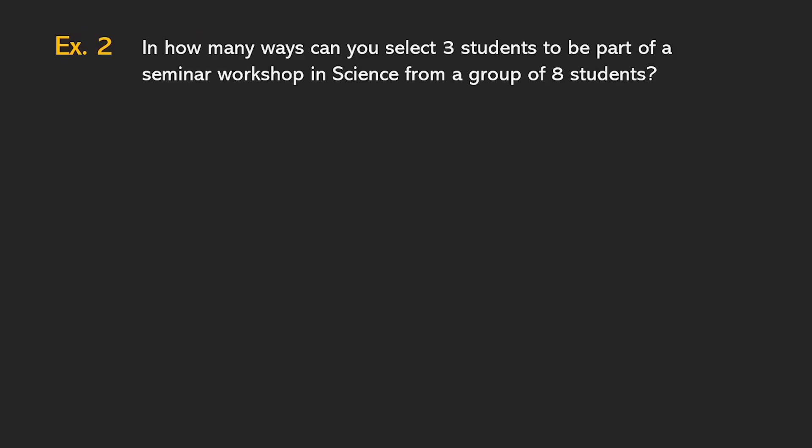Okay, let's have some examples. In how many ways can you select three students to be part of a seminar workshop in science from a group of eight students? Okay, again, mapipili ka ng tatlo since yung arrangement hindi nagmamatter. From n objects, kailangan mo lang ng tatlo. So, the combination of eight objects taken three at a time is equivalent to eight factorial over eight minus three factorial, three factorial.